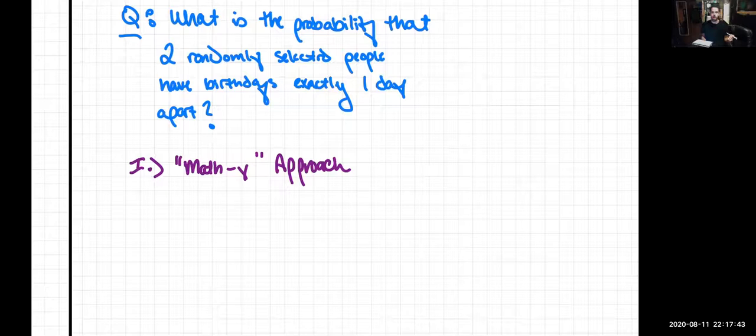Well, there's 365 days, presumably in a year, and we want to choose one of those. So the number of combinations for possible days is going to be 365 choose one.